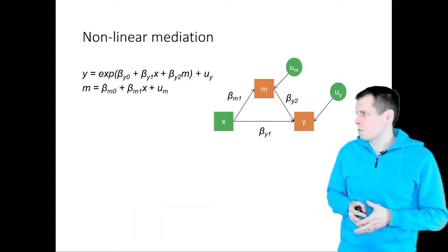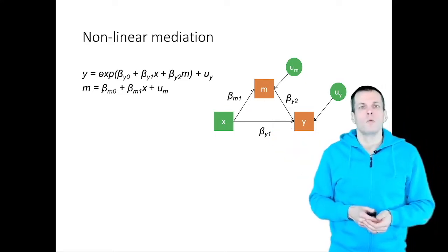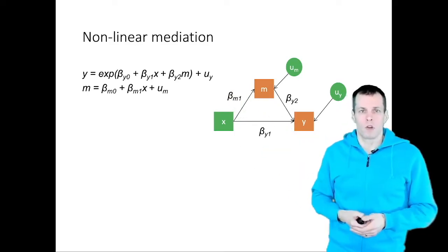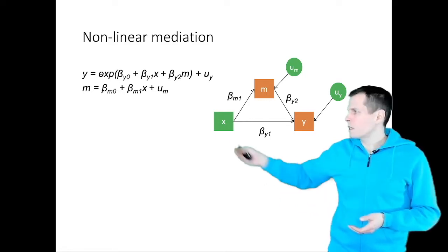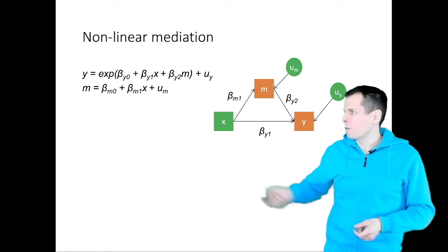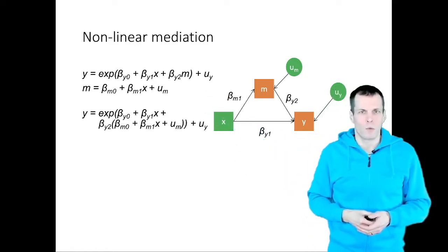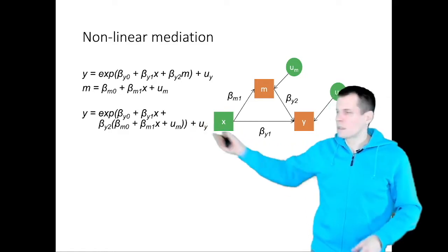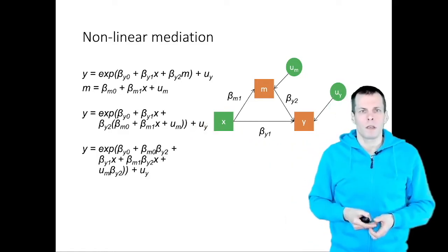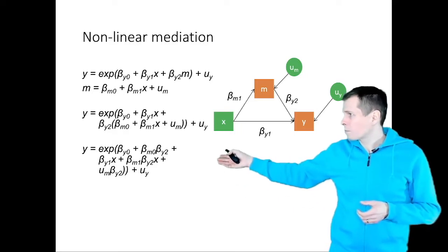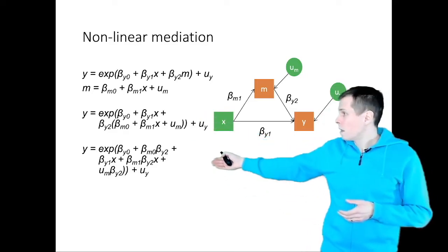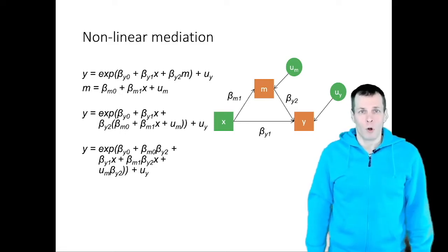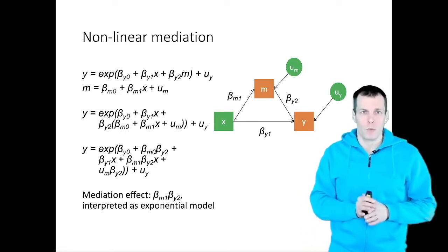For the non-linear mediation model, one example could be an exponential function for y — this might be, for example, Poisson regression analysis. We take the equation for the mediator and plug it in place of m in the equation for y. We play around with the equation a bit, multiplying out and removing the parentheses, and we can see this is still a pretty nice exponential model. We can actually interpret the product of coefficients in terms of an exponential model coefficient.